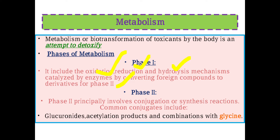Phase 1 of metabolism consists of three processes: oxidation, reduction, and hydrolysis. These facilitate Phase 2, which principally involves conjugation, combination, and synthesis reactions. Common conjugates in Phase 2 include glucuronides and acid-type productions. In synthesis, monomers are conjugated to form complex molecules or combined to form polymers, whereas in Phase 1, larger molecules are hydrolyzed and broken down into smaller units or monomers.